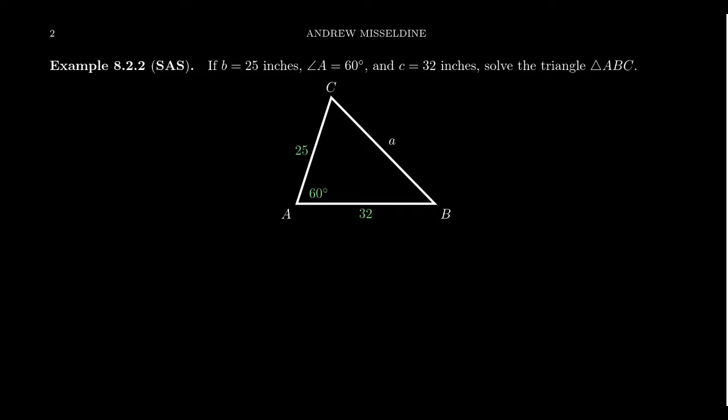So the only angle we know is angle A, but we don't know side length A. So we can't solve using that AOS. If you try to look at B, we know the side B but we don't know the angle B. So we can't use that AOS. Same thing with C. We don't know angle C, but we do know the side length of C there. So we're quite stuck there.